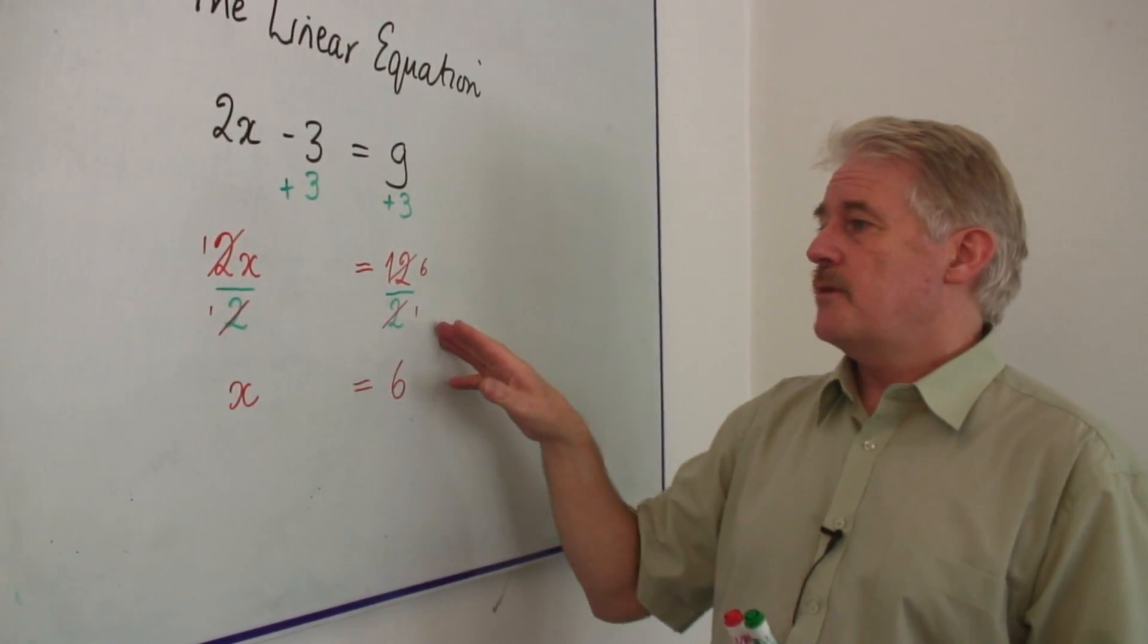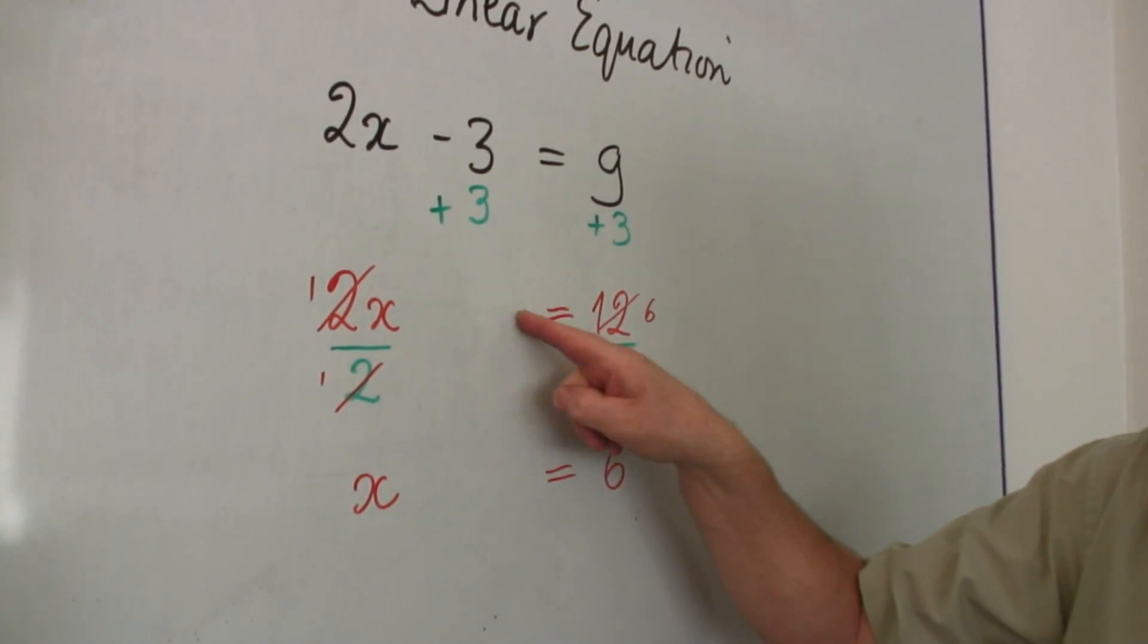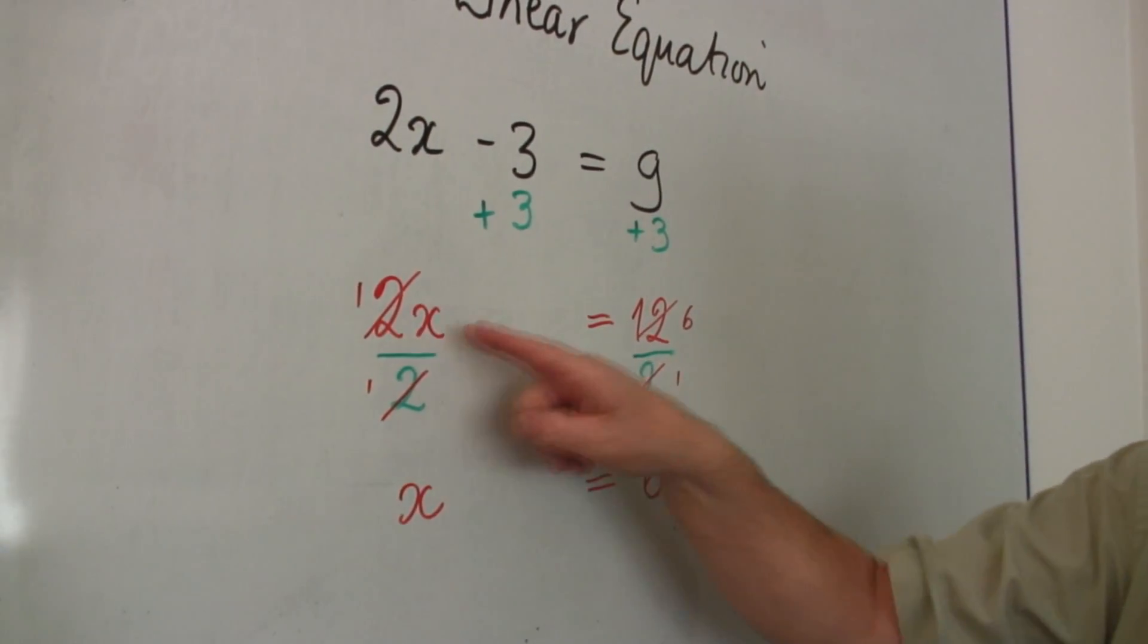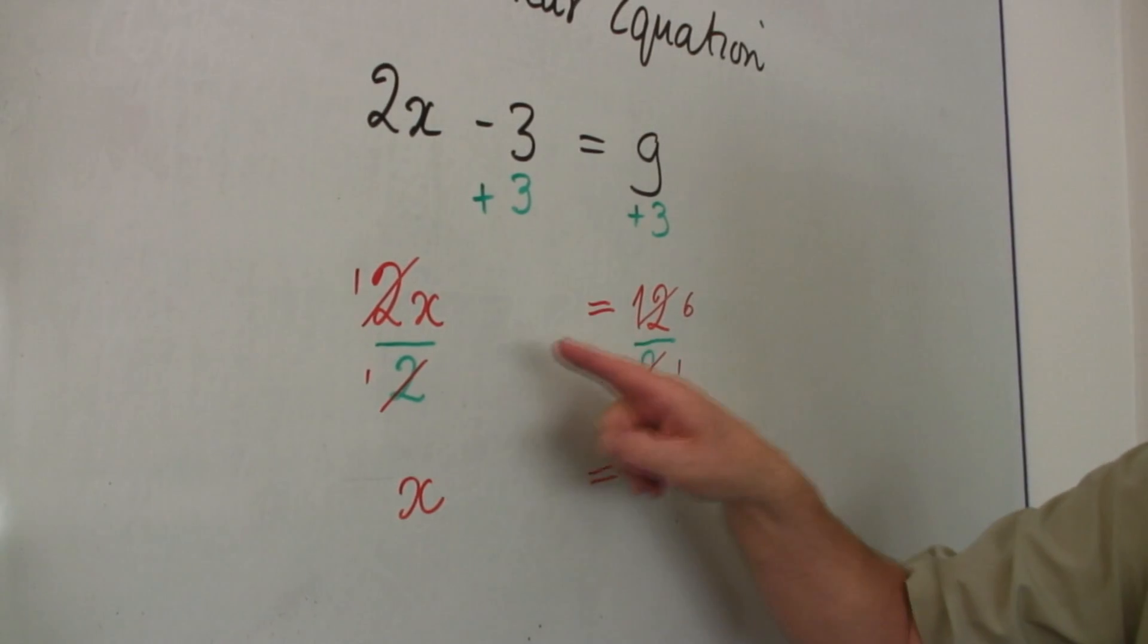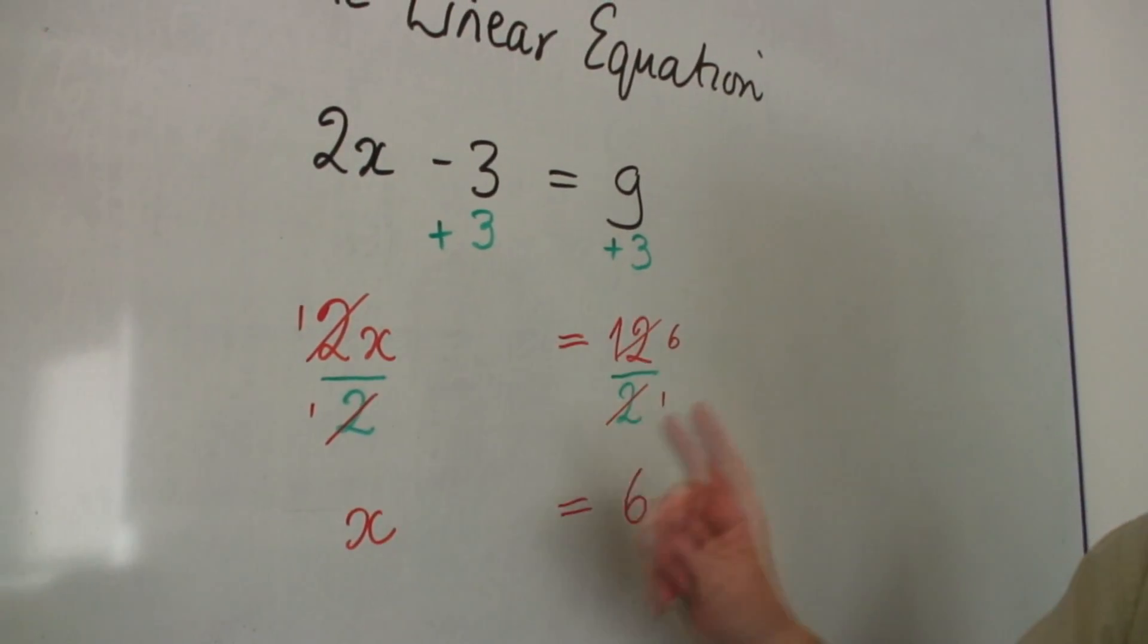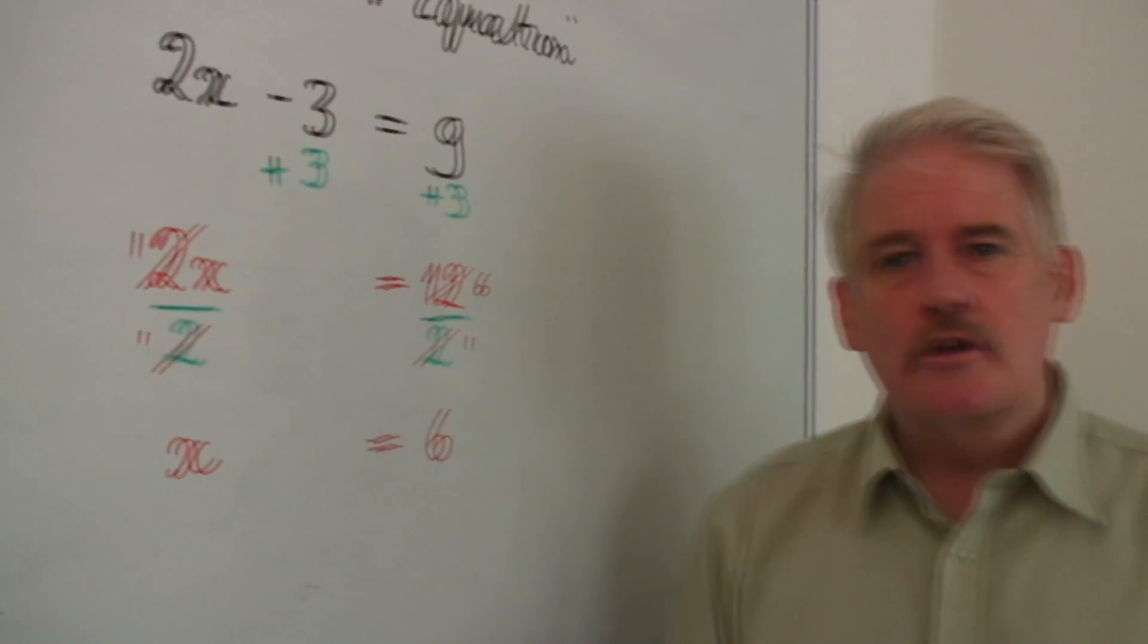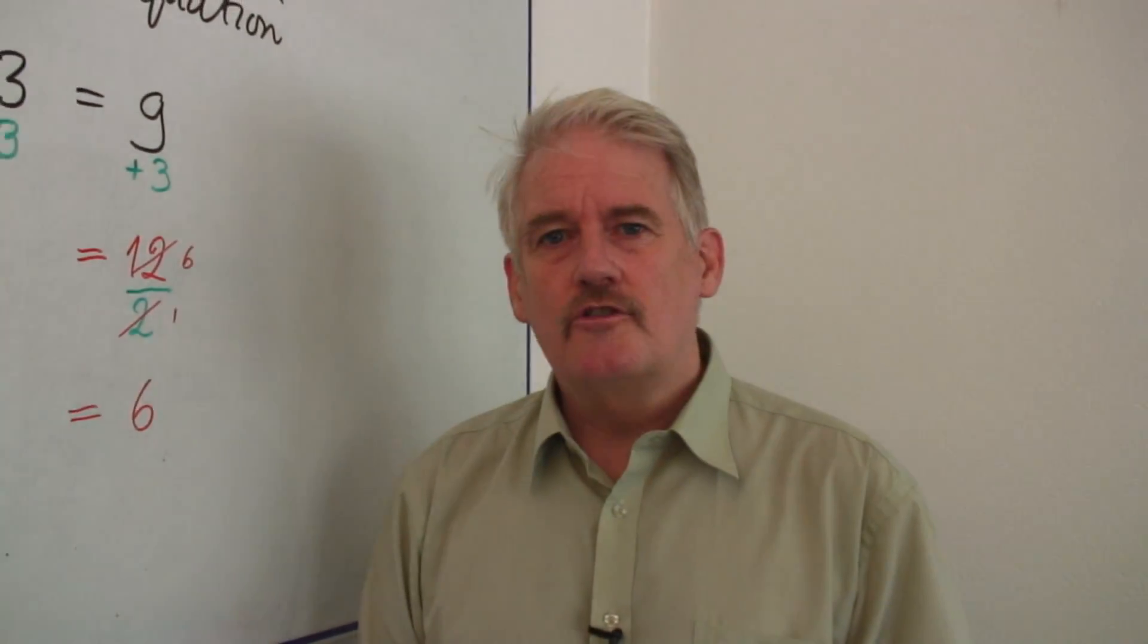Here I divide by 2. I'm doing the same to both sides. Remember if there are more terms on this side, that is 2x plus 2y, I would have to divide the 2y by 2 as well. Just be careful. If you're careful, you will never have problems solving linear equations ever again.